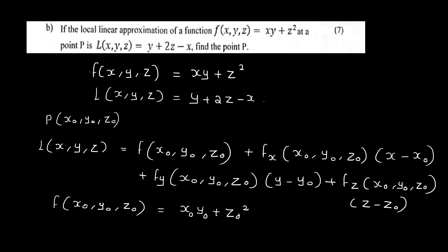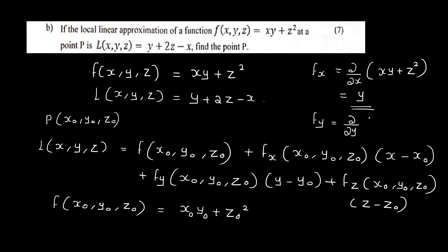Now, what do we need to do with derivatives? Fx is the partial derivative with respect to x of xy + z². The derivative of xy with respect to x is y. Then Fy is the partial derivative with respect to y of xy + z², which gives x. And Fz is the partial derivative with respect to z of xy + z², and the derivative of z² is 2z.